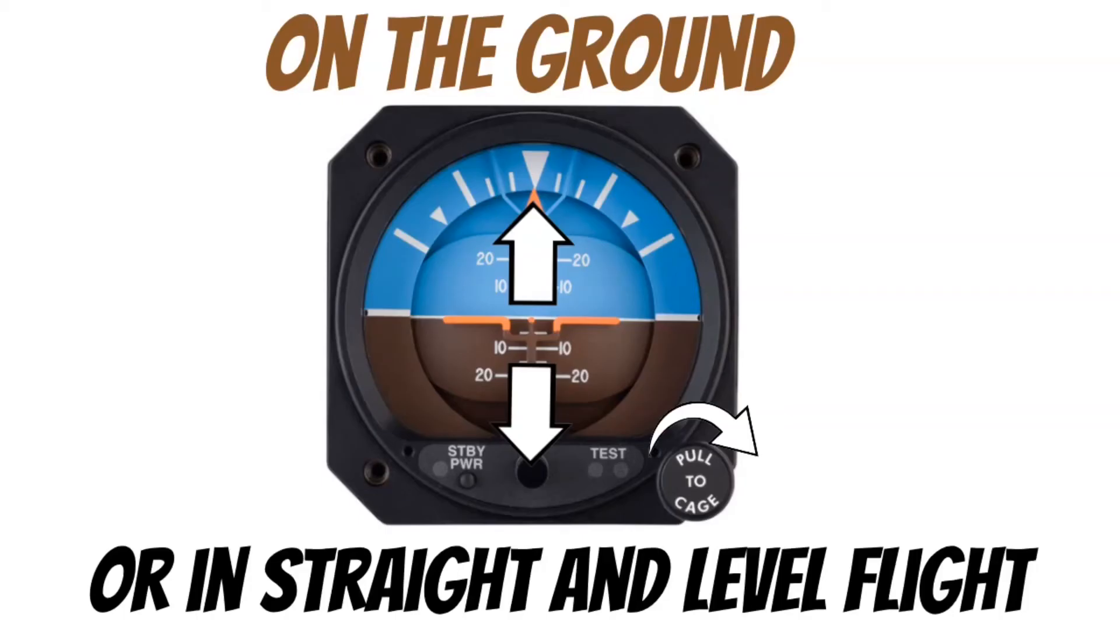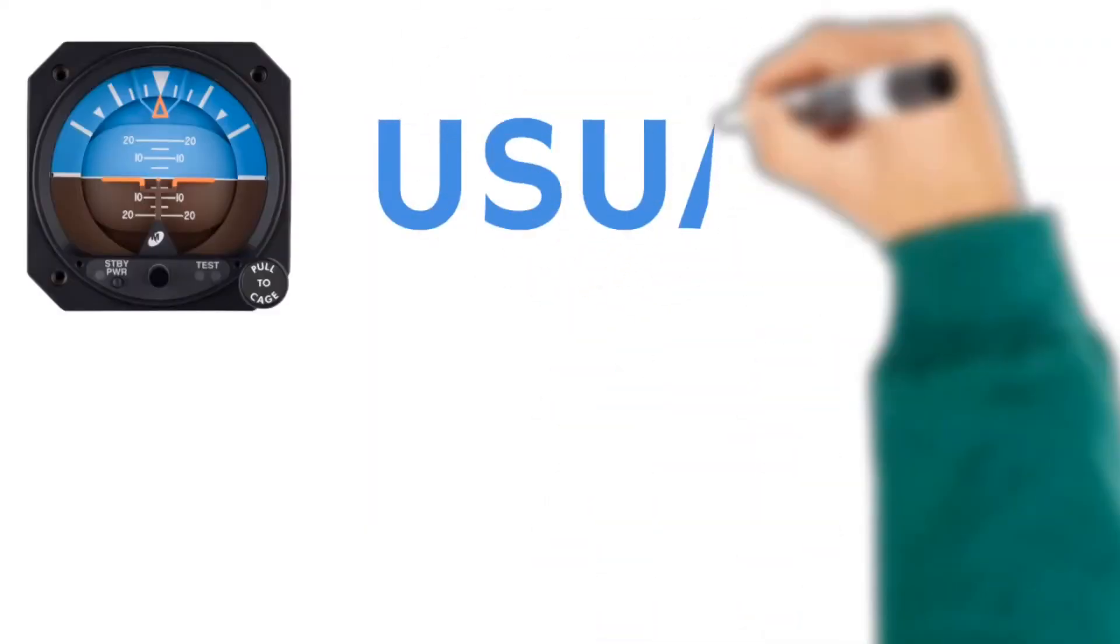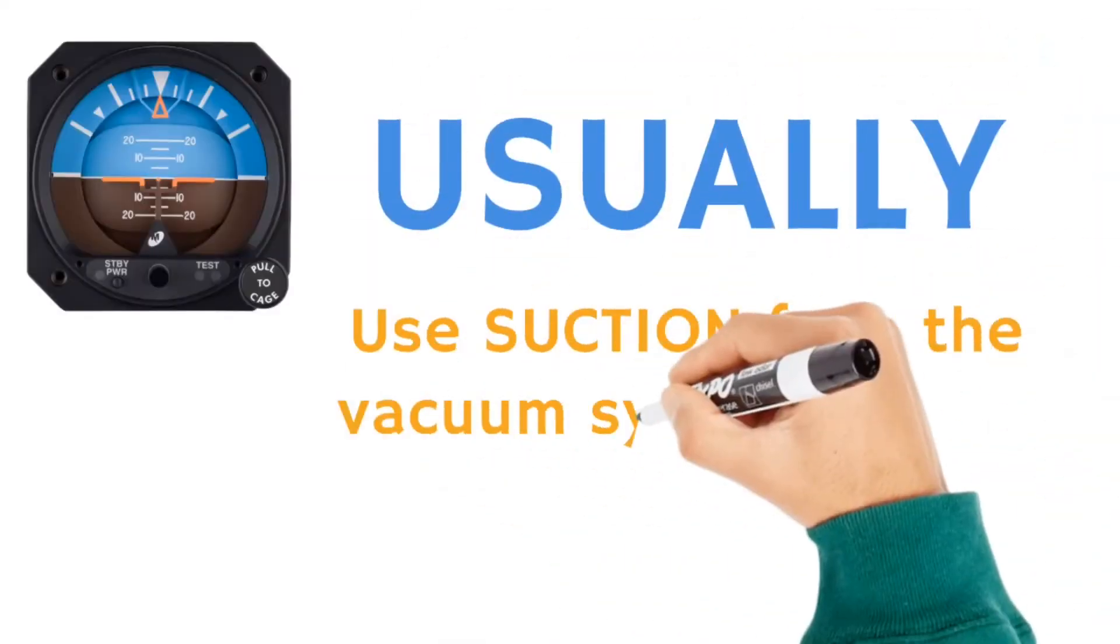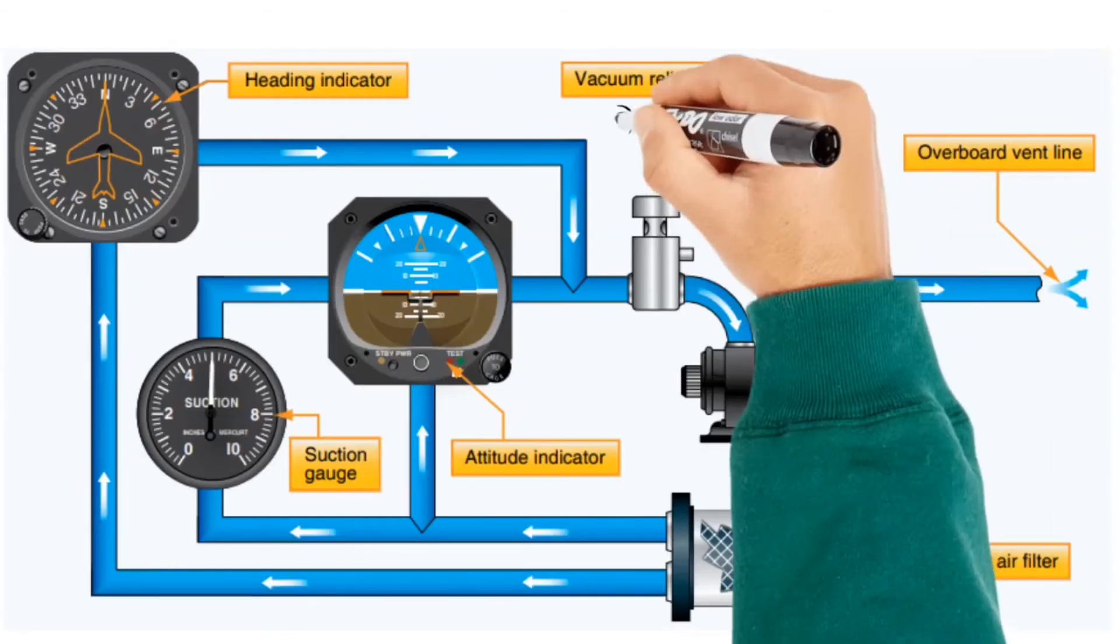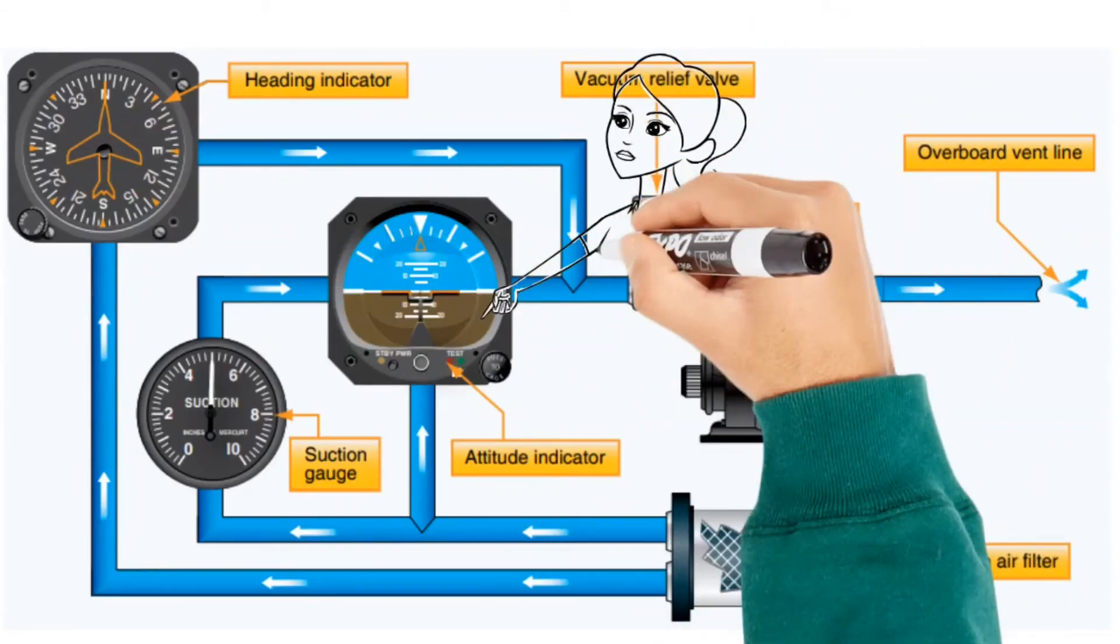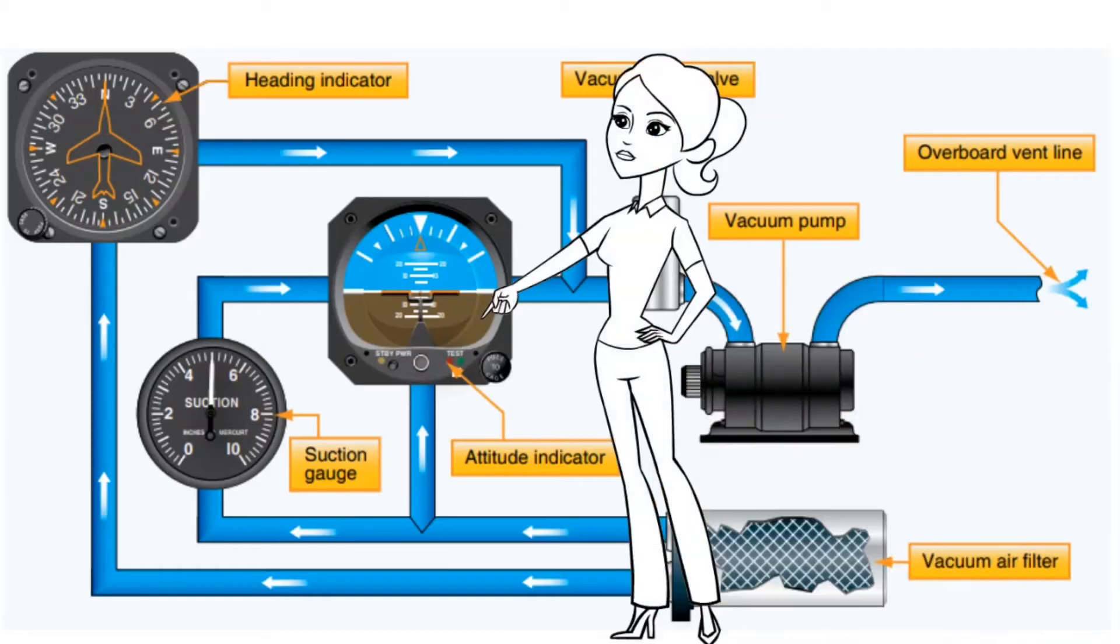Now, as we mentioned before, the attitude indicator is also a gyroscopic instrument. Sometimes you will find attitude indicators that use electricity to spin the gyros inside of these. But on most training aircraft, you'll usually find that these use suction from the vacuum system to spin the gyro. So, because of that, just like the heading indicator, if you're not getting good suction on the vacuum system, your attitude indicator won't work properly.